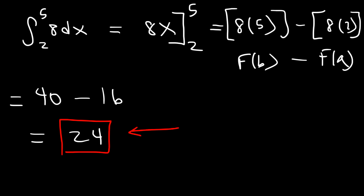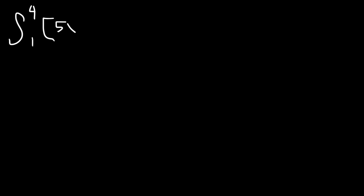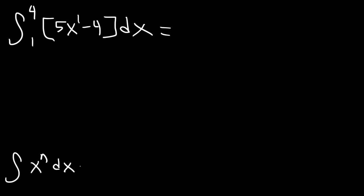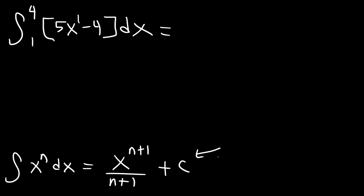The final answer of a definite integral is a number. Now let's try another problem — evaluate this definite integral. First let's find the antiderivative of 5x minus 4 using the power rule. The antiderivative of x raised to the n is x raised to the n plus 1 divided by n plus 1. When you have a definite integral you don't need the constant of integration — it's going to cancel. The antiderivative of 5x is 5x squared divided by 2, and for negative 4 it's negative 4x.